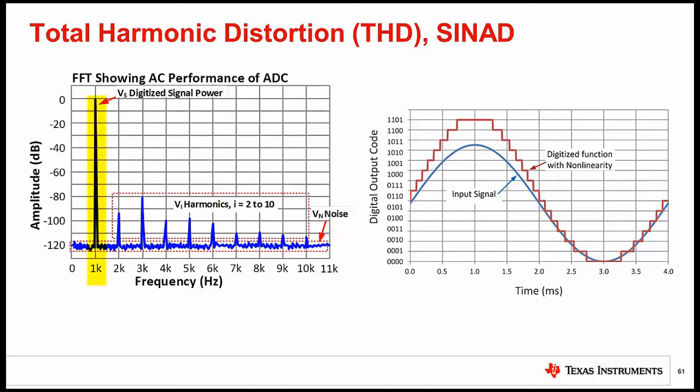In this case, the fundamental is at 1 kHz and there are harmonics at 2 kHz, 3 kHz, 4 kHz, and so on. Sometimes it is useful to differentiate between even and odd harmonics, as different circuit non-idealities may generate one type of harmonic. Even harmonics are even multiples of the fundamental frequency, and odd harmonics are odd multiples of the fundamental.